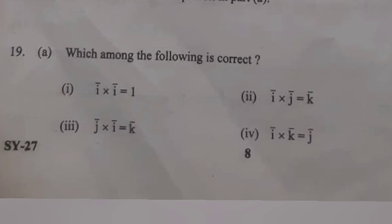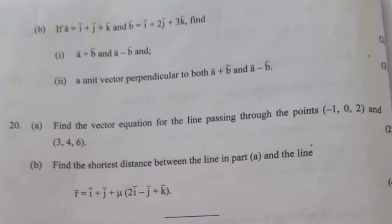Question 19A: Which among the following is correct? Answer: i × j = k. Question 19B: If a = i + j + k and b = i + 2j + 3k, find (1) a+b and a-b, and (2) a unit vector perpendicular to both. Answer: p = a+b = 2i+3j+4k, q = a-b = 0i-j-2k. Unit vector = (p×q)/(|p||q|) = (-2i+4j-2k)/(√29·√5).